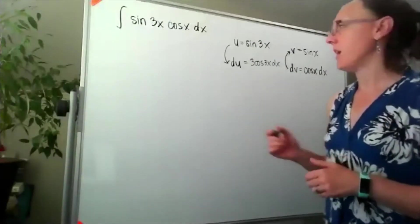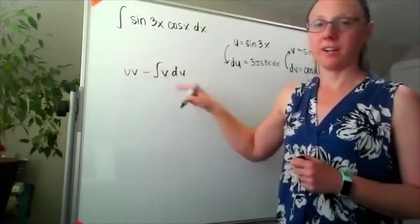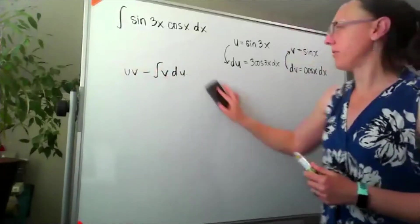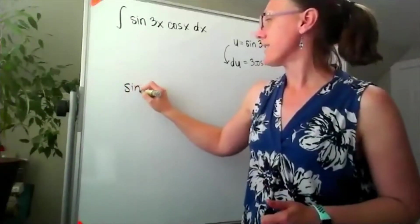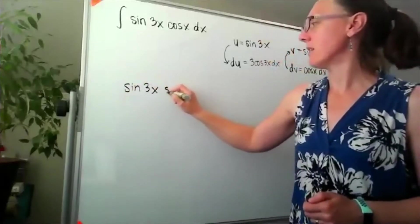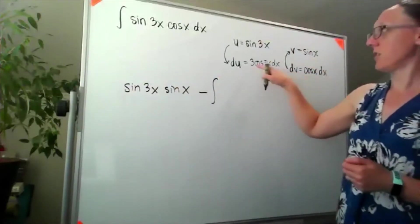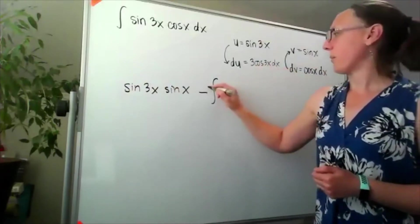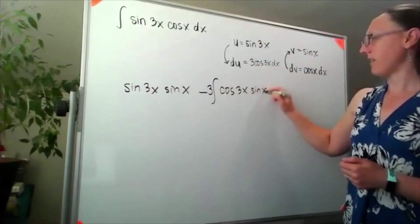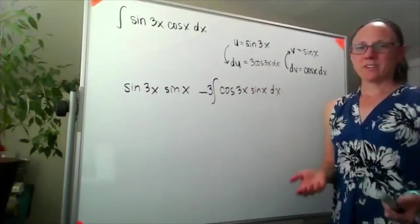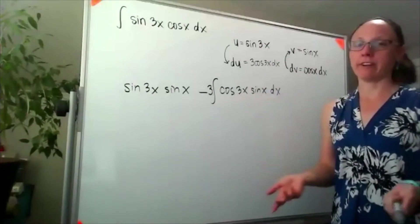Putting these together in our integration by parts formula, I know that I need u times v minus the integral of v du. So I'm gonna have u times v - sine of 3x times sine of x - minus the integral of v du, which is sine of x times negative 3 cosine 3x dx. So I'm gonna stick my 3 out in front and we'll have negative 3 times the integral of cosine 3x sine of x dx.